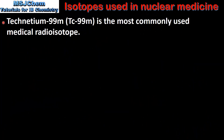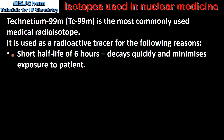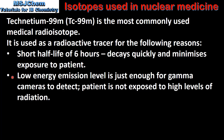Technetium-99m is the most commonly used medical radioisotope. It is used as a radioactive tracer for the following reasons. It has a short half-life of 6 hours, which means it decays quickly and minimizes exposure to the patient. The low energy emission level is just enough for gamma cameras to detect, therefore the patient is not exposed to high levels of radiation.